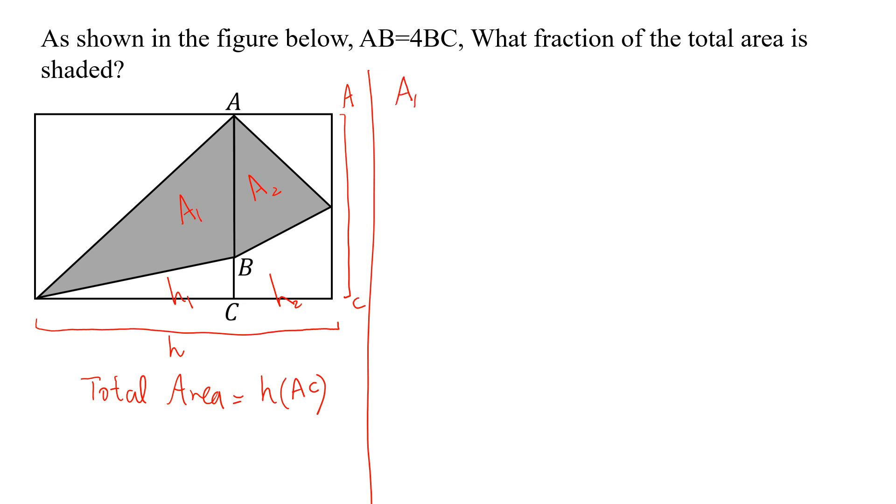The shaded part will be equal to A1 plus A2, and this equals half of H1 times AB plus half of H2 times AB. We will take common half of AB times H1 plus H2.